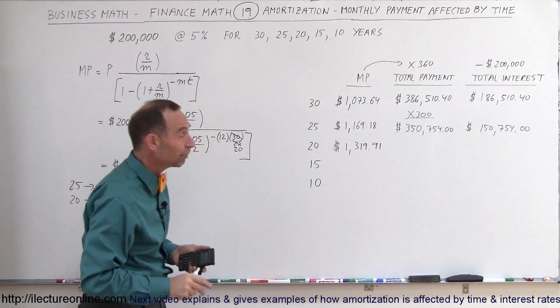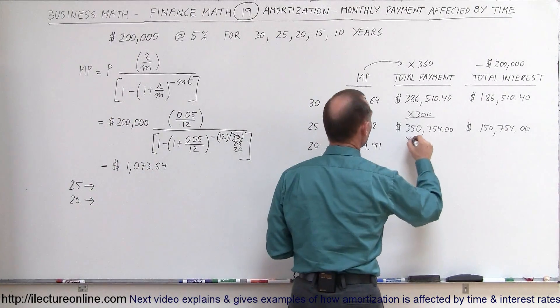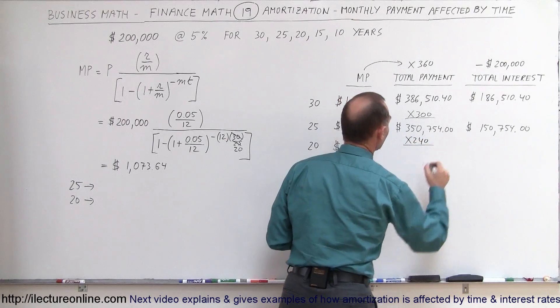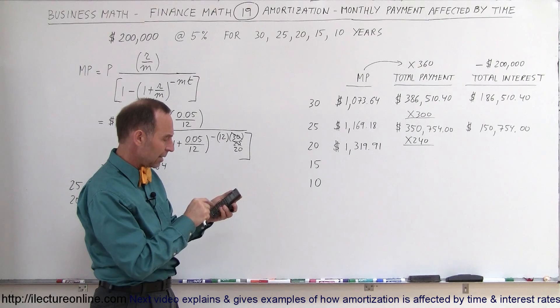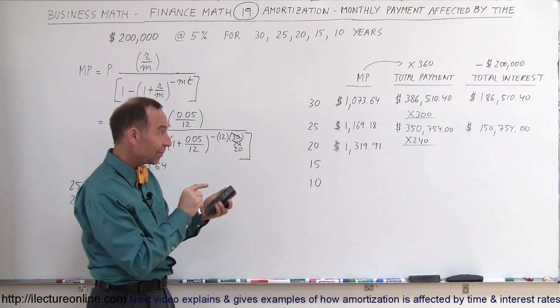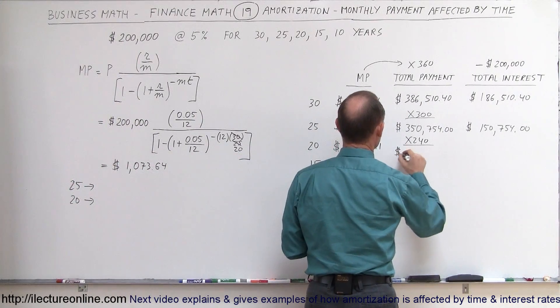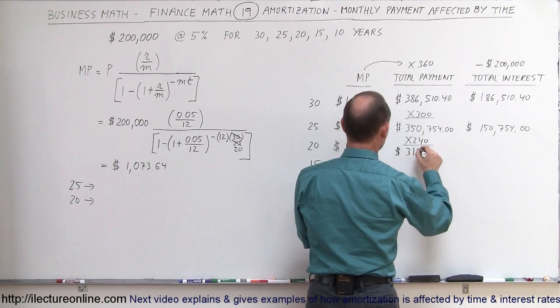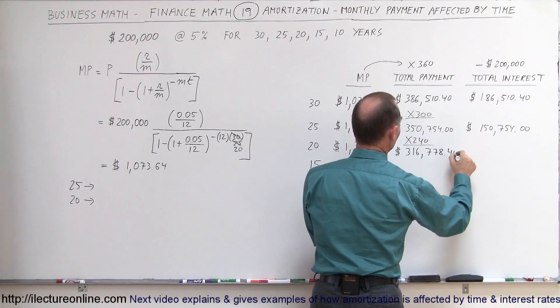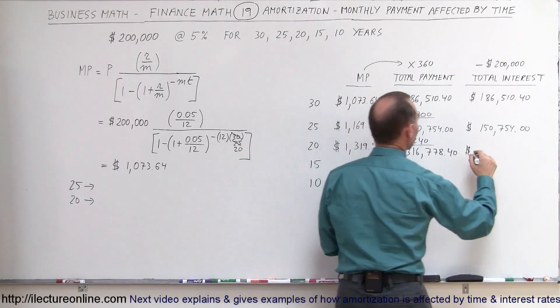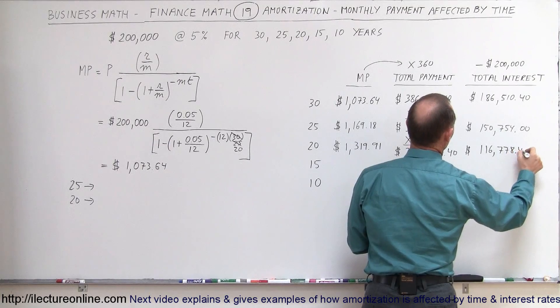It's more expensive every month, but it's only now for 20 years instead of 30 years. So now when we multiply that quantity by 240, let's see what your total payments to the bank will be now. $1,319.91 times 240 payments. So the total payment to the bank now will be $316,778.40, which means the total payments in interest to the bank is now $116,778.40.